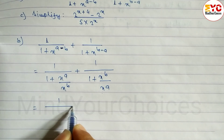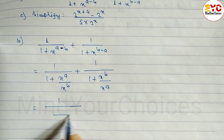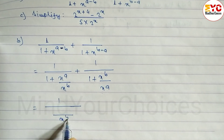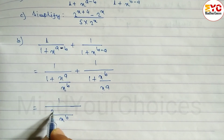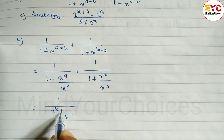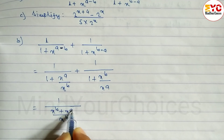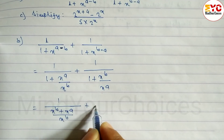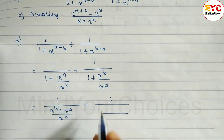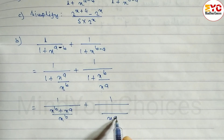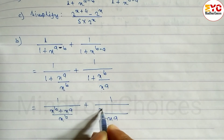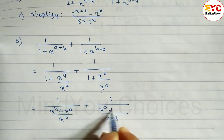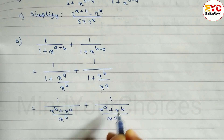Now take LCM here. LCM will be x to the power B. So x power B into 1 gives x power B plus x power A plus 1 divided by, taking LCM of x power A, giving x power A into 1, which is x power A plus x power B.